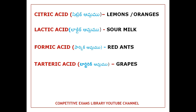First, we will talk about Citric Acid. Citric Acid is found in lemons and oranges. Next is Lactic Acid. Lactic Acid is found in sour milk.